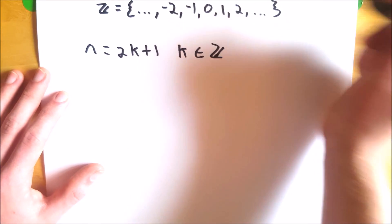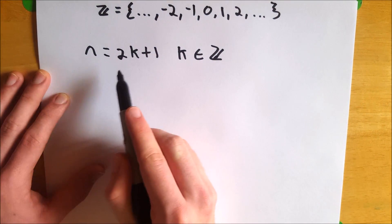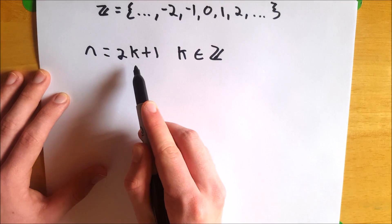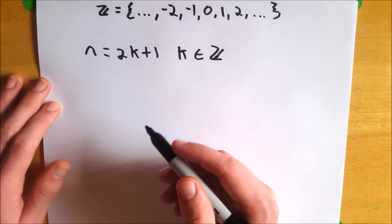So a number is odd if and only if it can be written as 2k plus 1 for some k that is an element of the integers. So let's go over a couple examples and that'll be it.